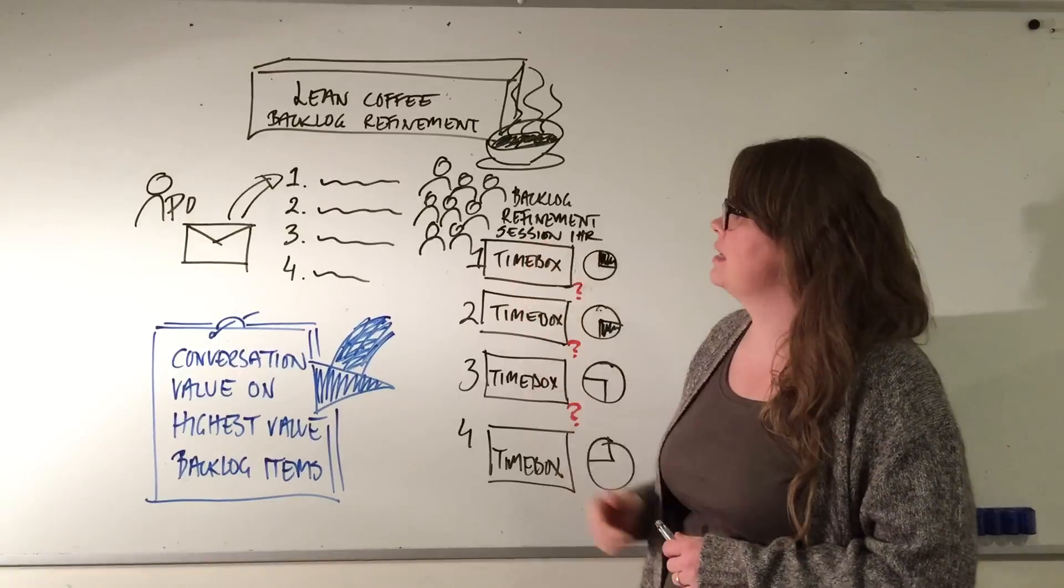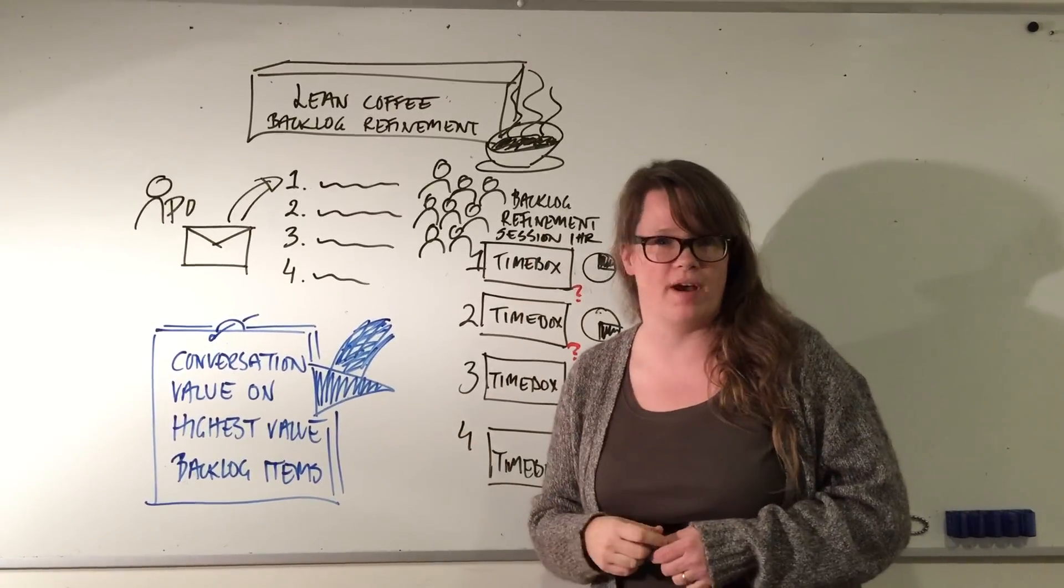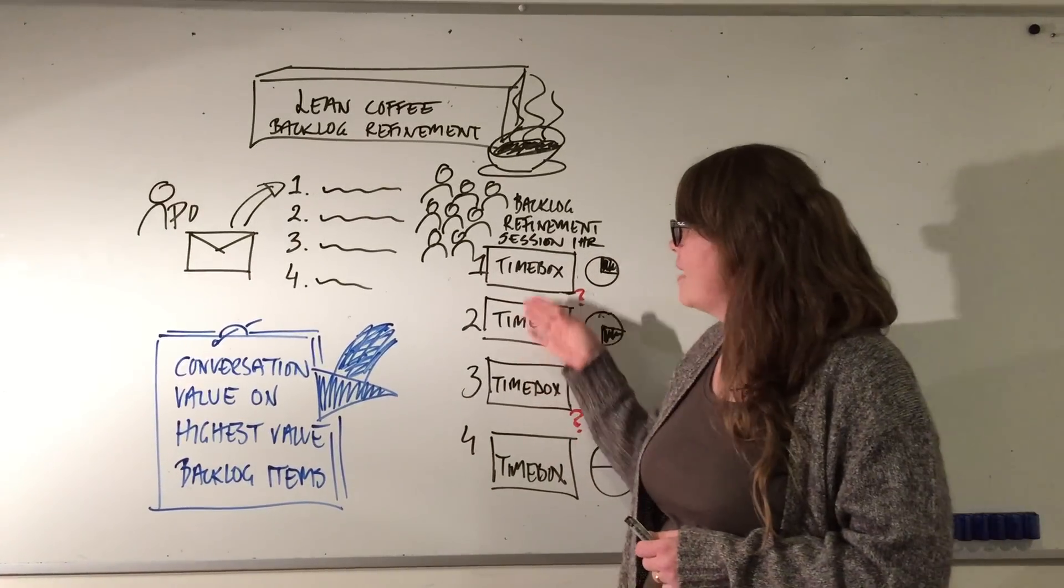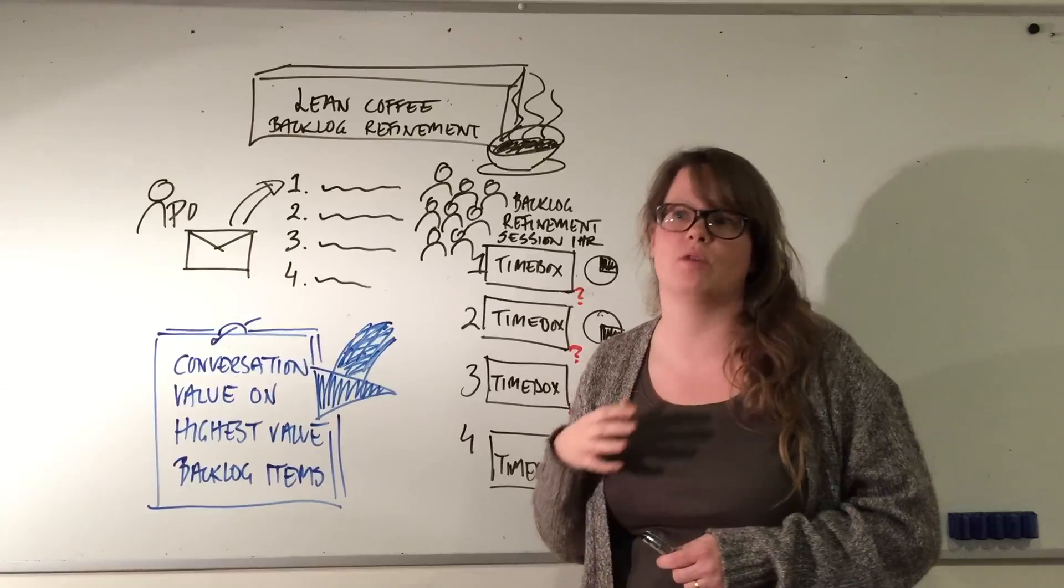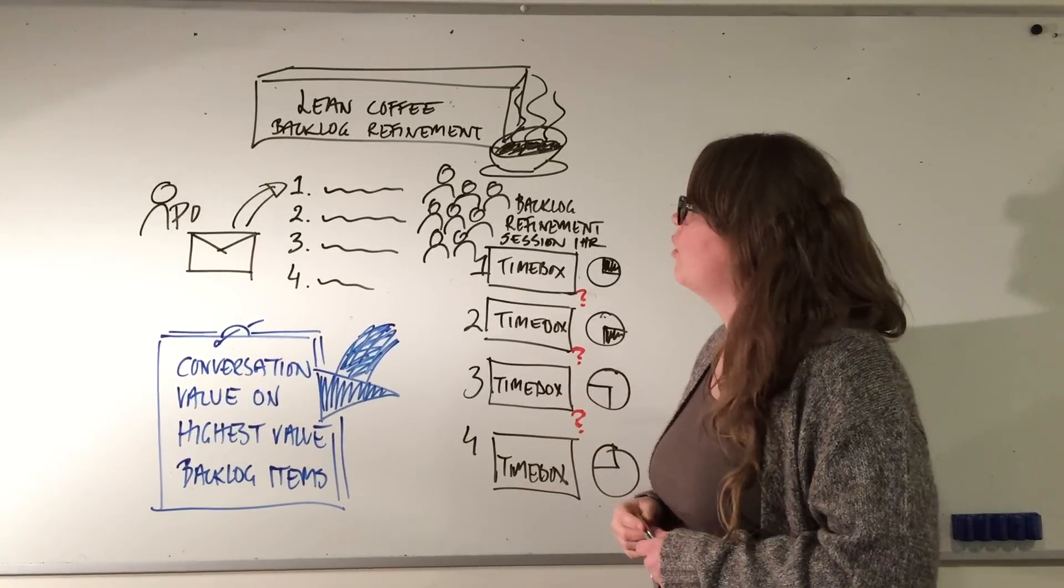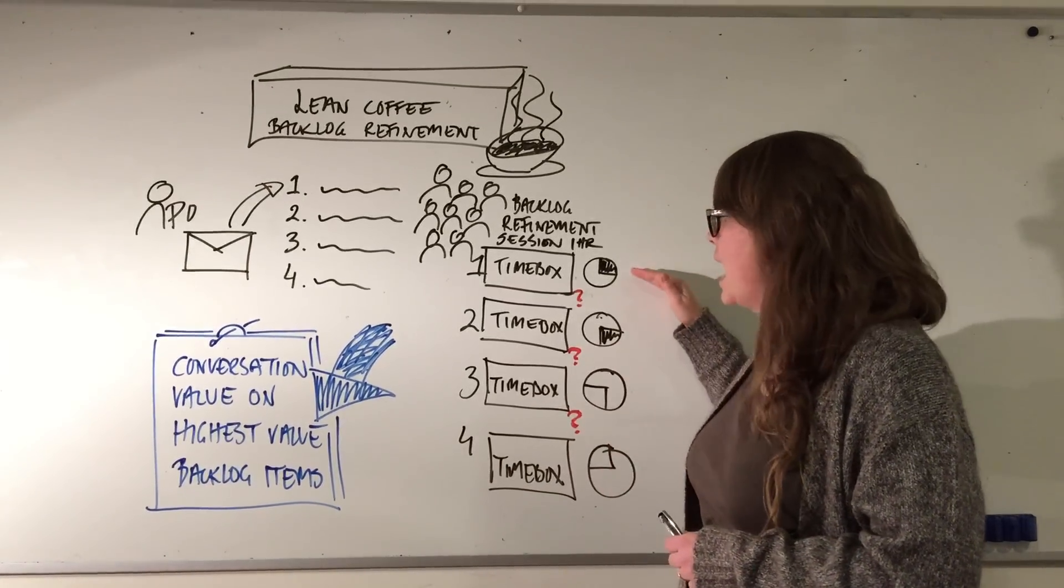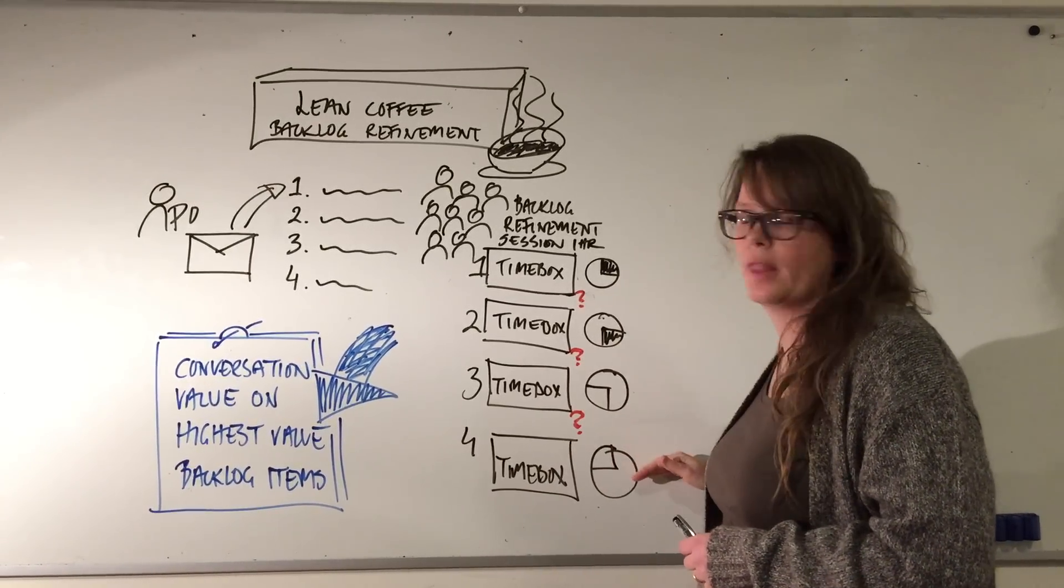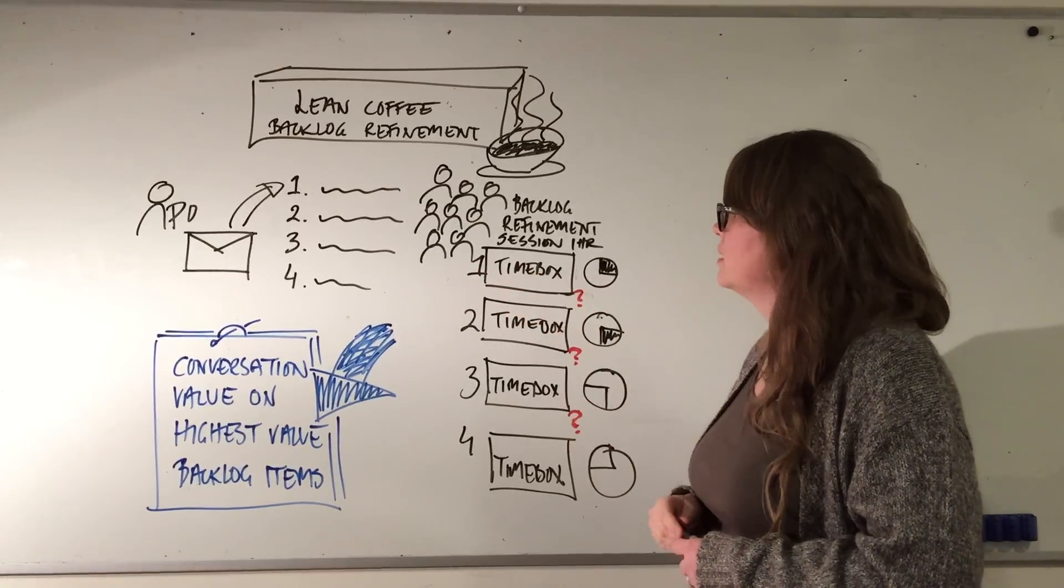The next day, the team meets for their usual backlog refinement session. In this example, we have a team with a one-hour backlog refinement session. The Lean Coffee principle here is that we divide the hour into four time boxes and use this list to pull items.